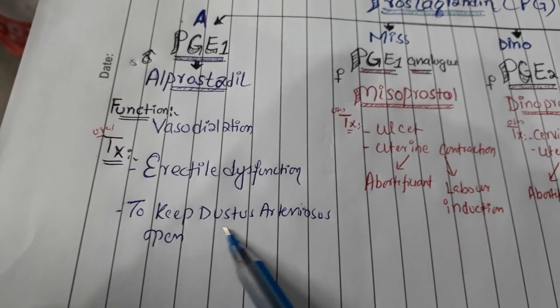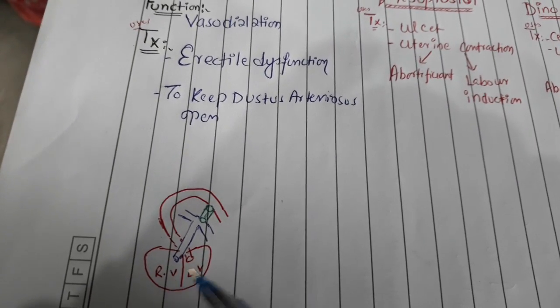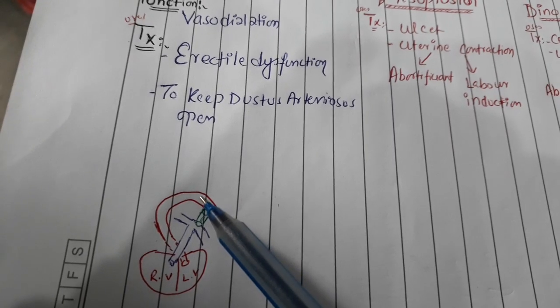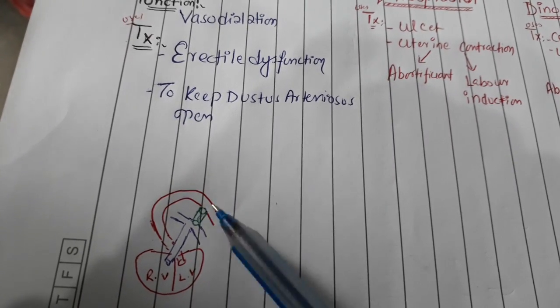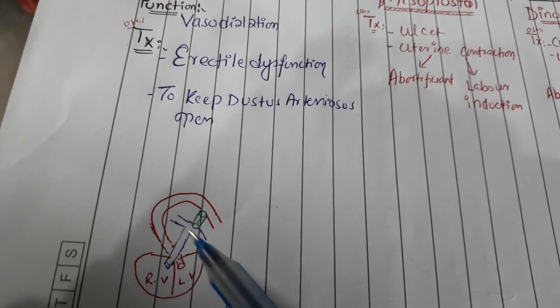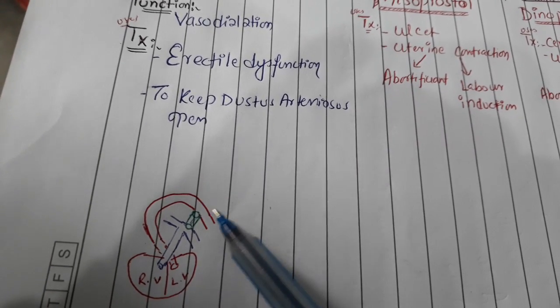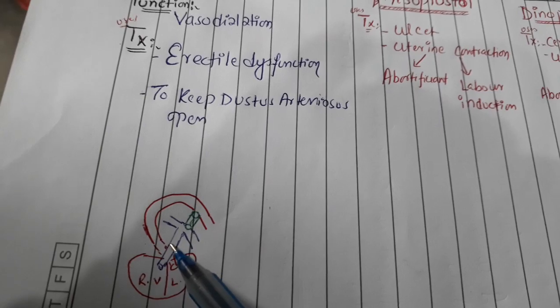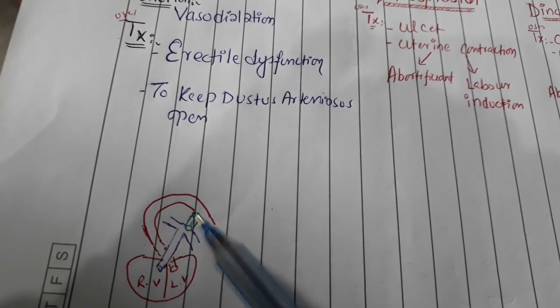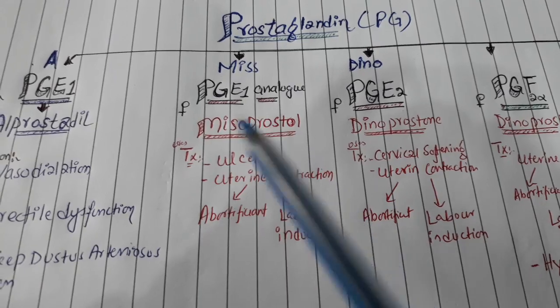To keep open the ductus arteriosus - this is right ventricle, left ventricle, and this is pulmonary trunk and this is aorta. So there is the connection between the aorta and pulmonary trunk, this is called ductus arteriosus. In some congenital heart diseases, we want the blood should move from aorta to the pulmonary trunk and from the pulmonary trunk to aorta, so we will try to keep it open. For that we can give Alprostadil.